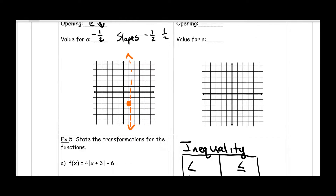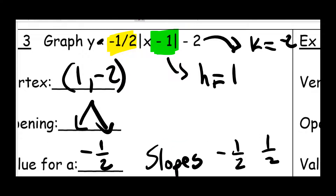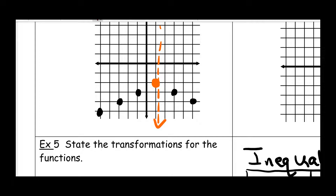From here, I'm going to move using my two slopes. I go down one, over to the left two, down one, over to the left two — that's the left side. Then the right side, from the vertex I go down one, to the right two, and down one, to the right two. From here, I analyze my symbol. I've got a less than symbol. Since that symbol is less than, when I connect those dots I'm going to do so using a dashed line — dashed right there and dashed right there.